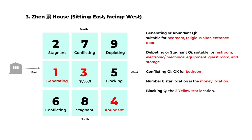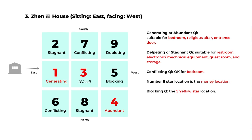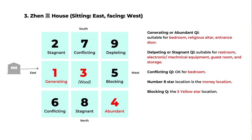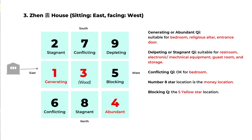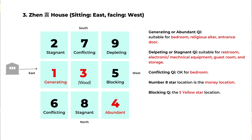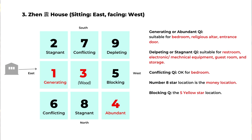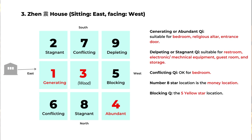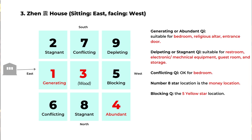The third chart is for the Zhen house — a house sitting on the east side and facing west. The number three flying star goes to the center for the Zhen house and it belongs to the wood element. You can see the generating Qi is in the east side and the abundant Qi is in the northwest corner. You can take advantage of these good areas and set up your important spaces there, including bedroom, living room, or religious altar. The number eight money star is in the north side for this chart.